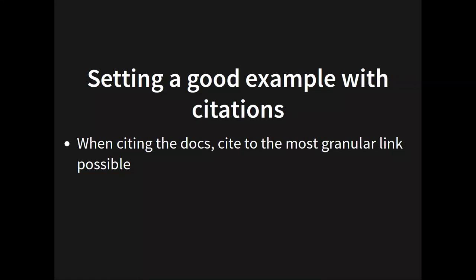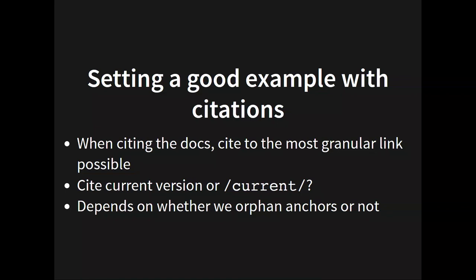When you are citing the docs — and please cite the docs a lot — use the most granular link possible, get it down as narrow as possible so the person sees the most relevant thing. The whole page is going to load and that's theirs to read if they want it, but give them the most specific thing. The question of whether to cite the current version or the current documentation is case-dependent and depends on whether we orphan anchors or not. If we don't orphan anchors, that's a good argument for using current far more than version-specific links.